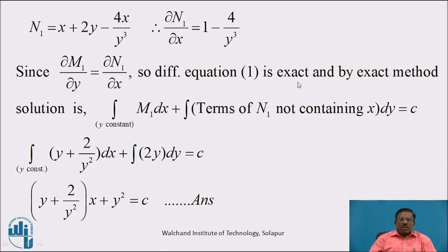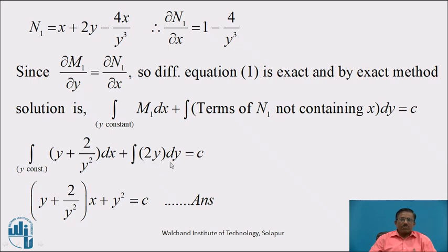By the exact method, the solution is integration of M1 with respect to x keeping y constant, plus integration of terms of N1 not containing x, dy = c. Therefore, integrating (y + 2/y²) dx gives (y + 2/y²)x, and the only term in N1 not containing x is 2y, so plus integration of 2y dy = y². Therefore the required solution is (y + 2/y²)x + y² = c.